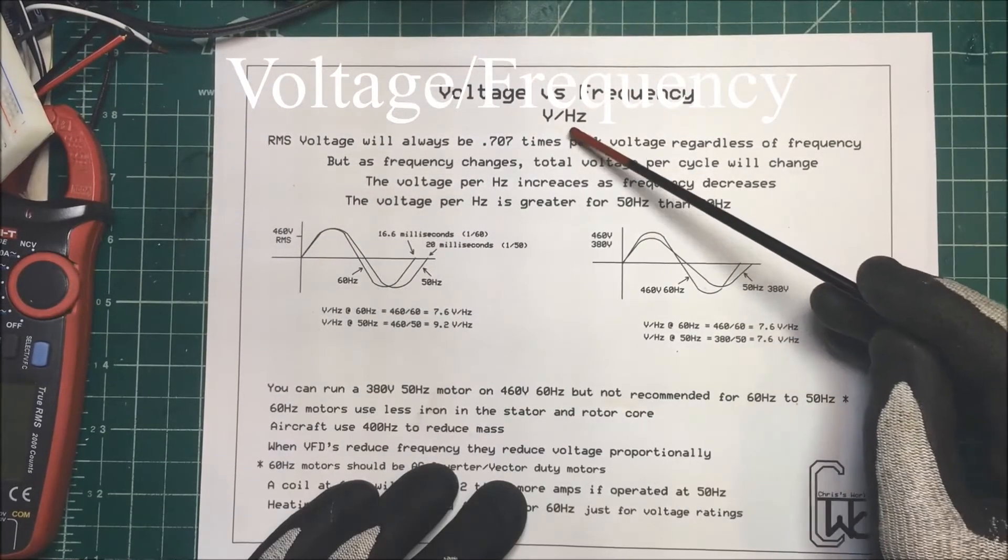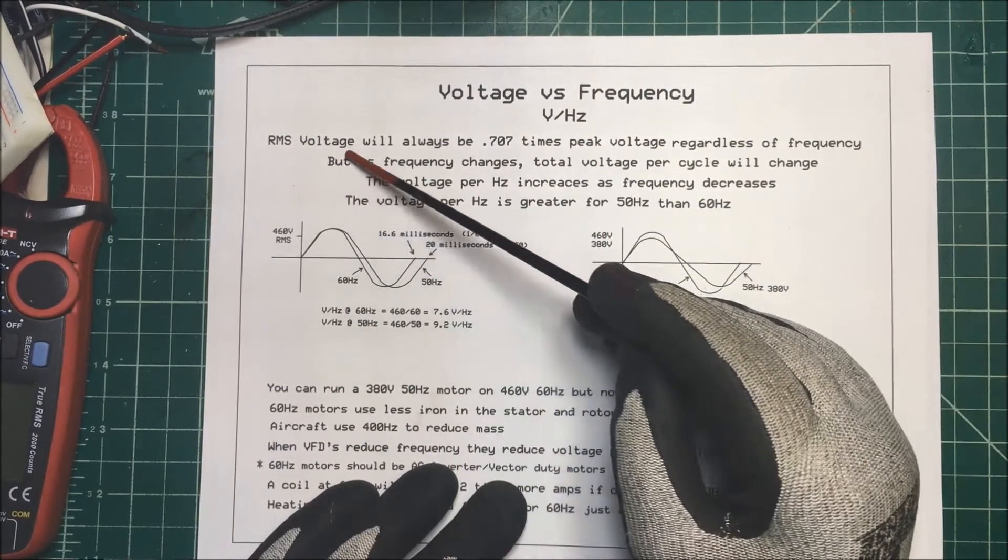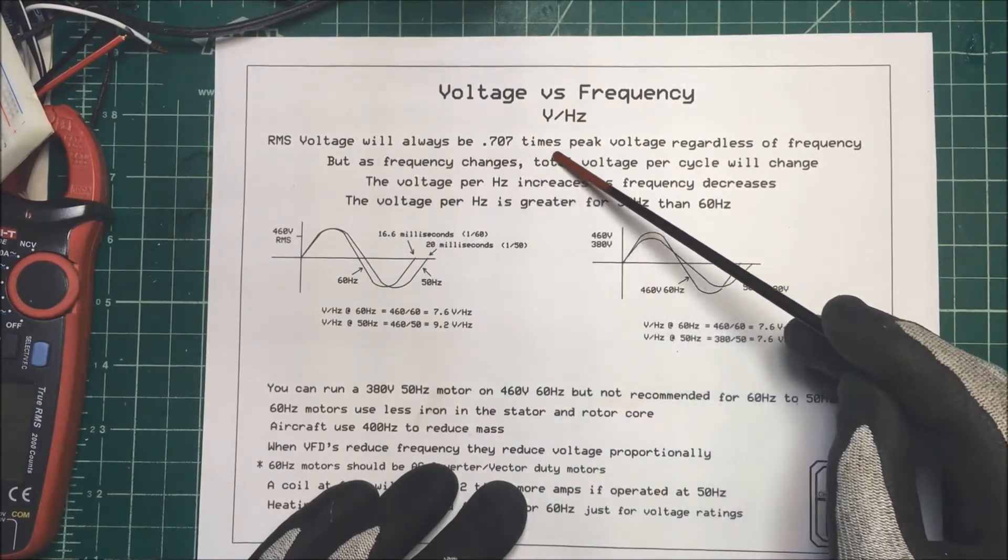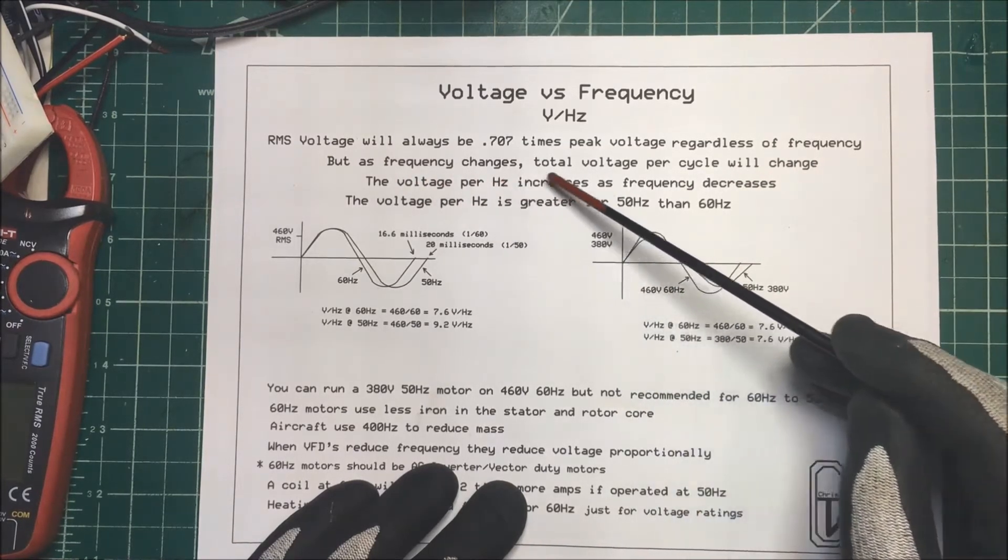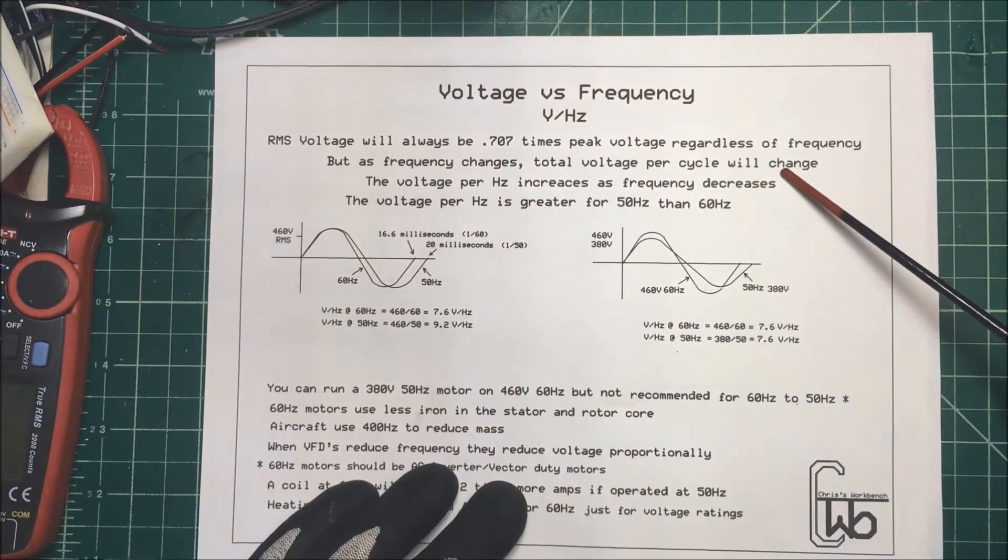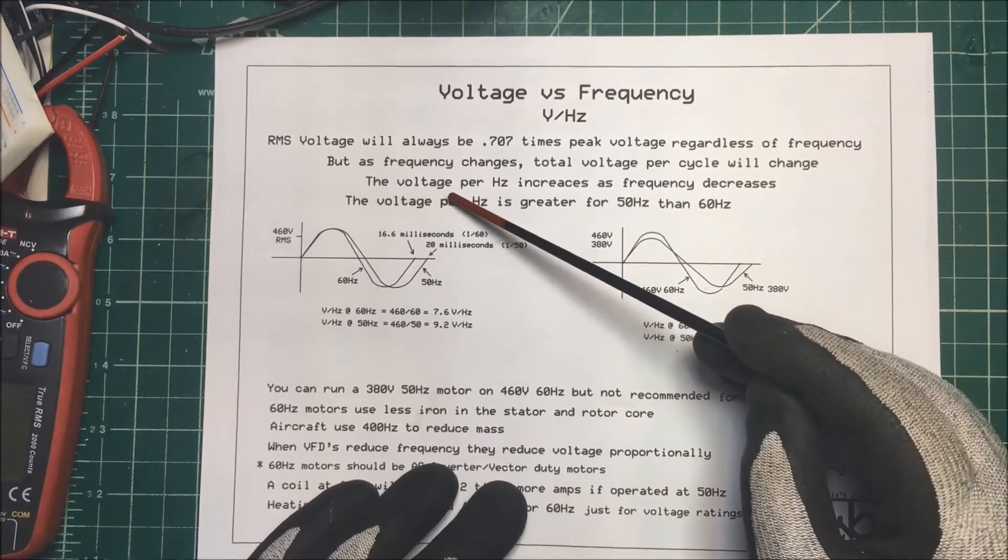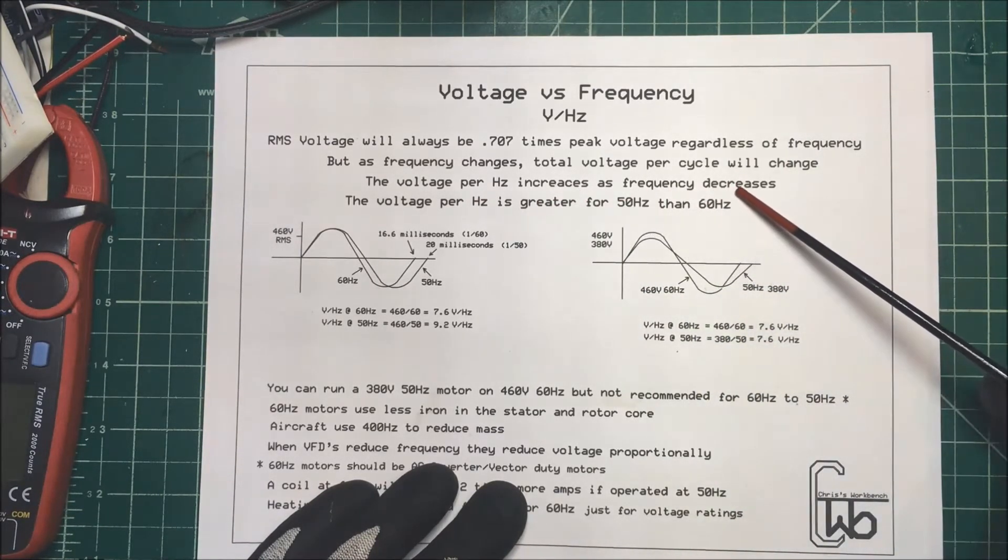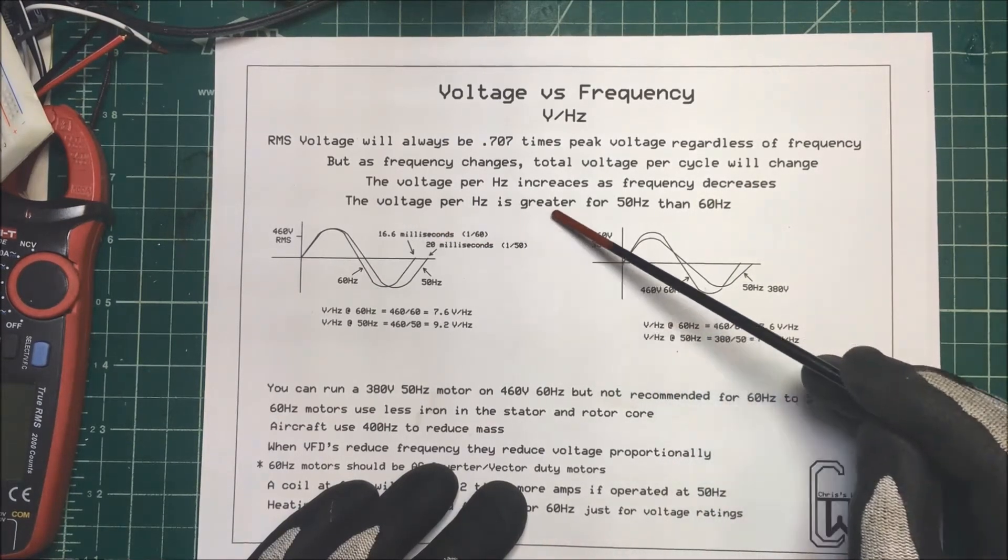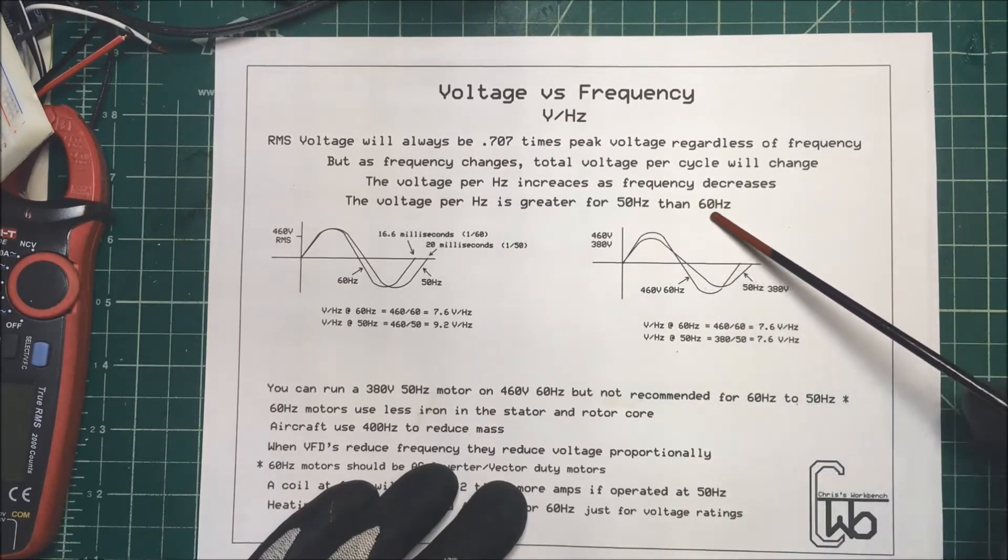Let's talk about voltage and frequency and volt hertz here. Now your RMS voltage will always be 0.707 times the peak voltage regardless of frequency. But as the frequency changes, the total voltage per cycle will change. The voltage per cycle increases as the frequency decreases, and the voltage per hertz is greater for 50 hertz than it is for 60 hertz.